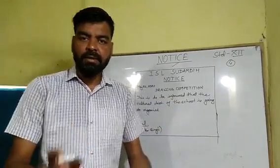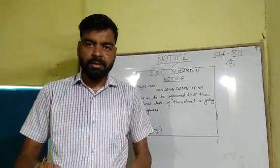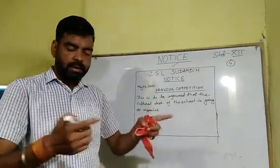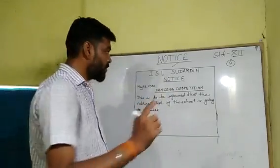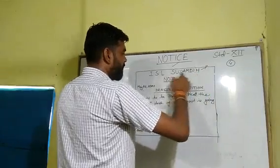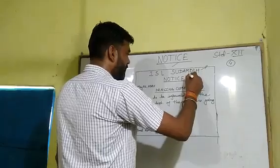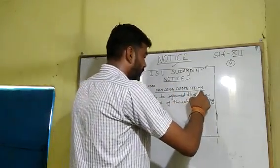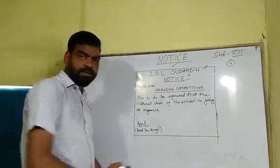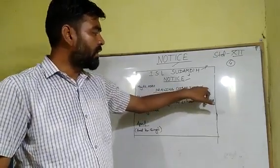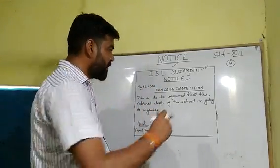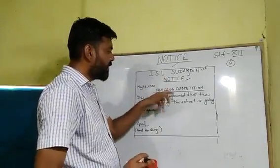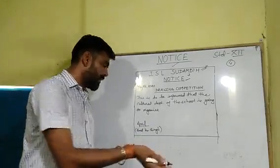This is the structure of the notice. You can also underline the competition title part — this is your headline, and you can underline it too. Keep in mind: the name of the institution, the word NOTICE, and the headline — these three parts must be highlighted in capital letters. You can use different types of decorative letters for the headline if you wish.